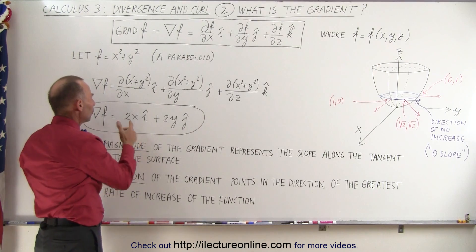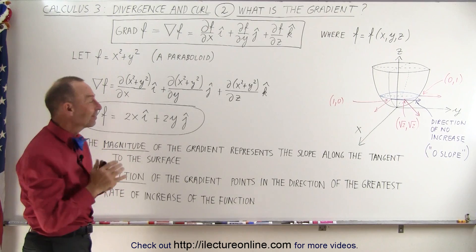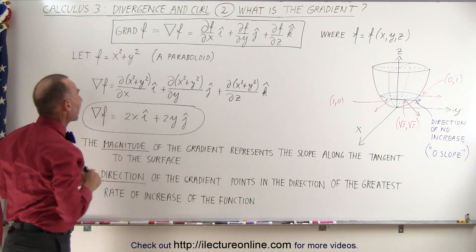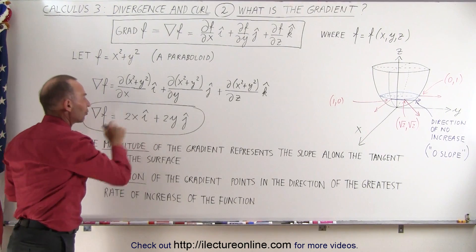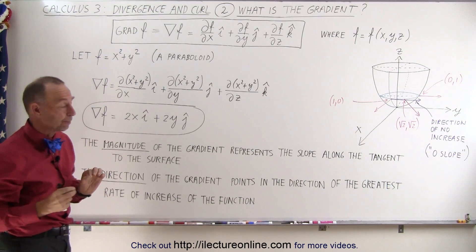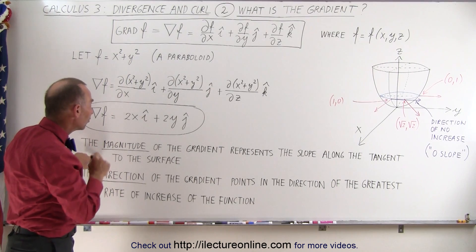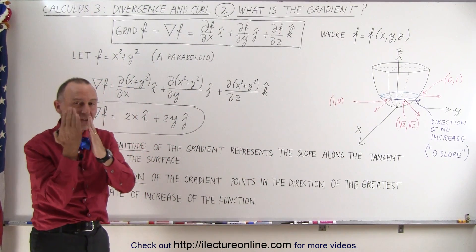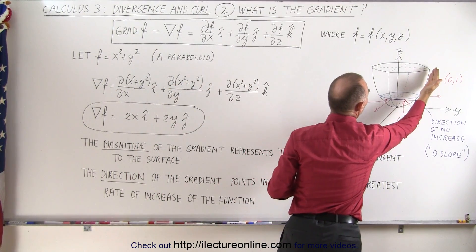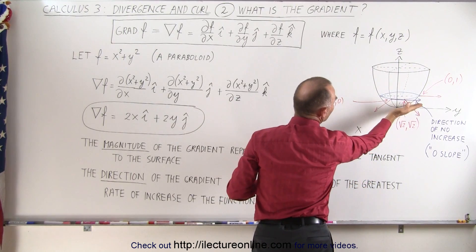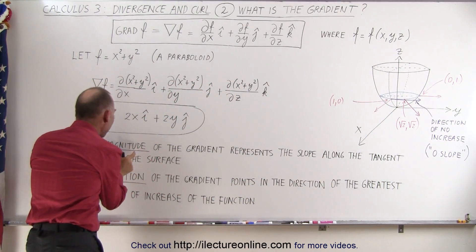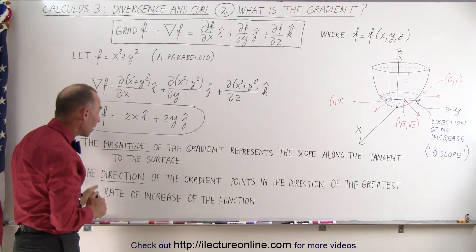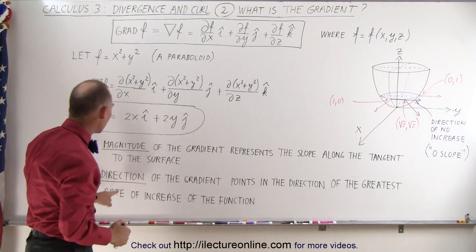To get a vector field for that, we use our graph to make sense of it all. Since the del operator acting on a scalar function produces a vector quantity, the gradient has both magnitude and direction at any point in space. The magnitude of the gradient represents the slope along the tangent line to that surface. Higher up the surface the slope is steep; near the origin the slope is near zero. The direction of the gradient points in the direction of the greatest rate of increase of the function.